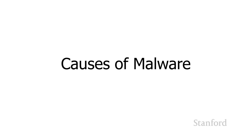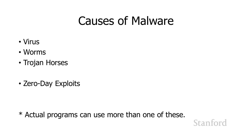So how does malware get on your computer? There are a number of different causes. We're going to talk about viruses, worms, and Trojan horses, and also zero-day exploits. There's overlap between these — we actually saw this with Brito Lab, which was both a virus and a worm. There are pieces of software that can cover more than one of these categories, or possibly all four if they're also based on a zero-day exploit.